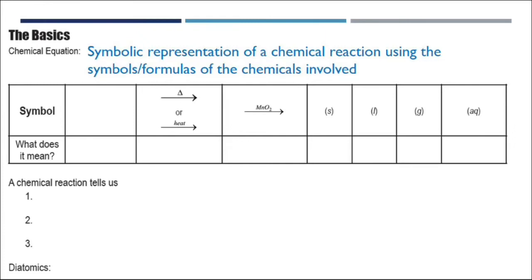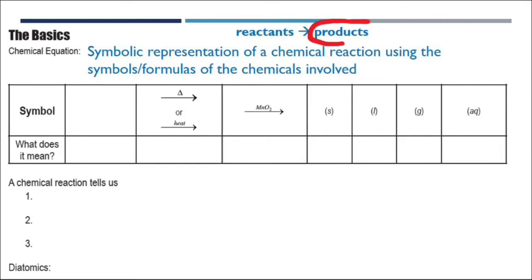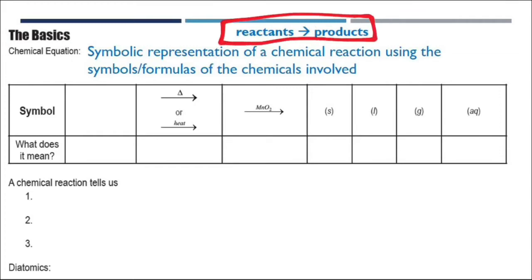There are two other words we need to define — the words for the stuff we have before and after the reaction happens. The stuff before our reaction, which we'll always see to the left of our arrow, are what we call reactants. After the arrow, the stuff that is produced or comes out of the chemical reaction is what we call products. Make sure these stand out because you need to be able to use these words as we talk about chemical reactions.